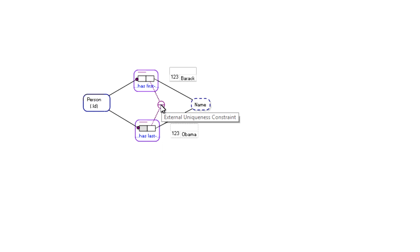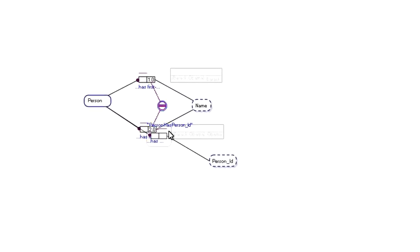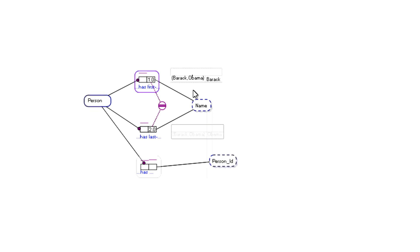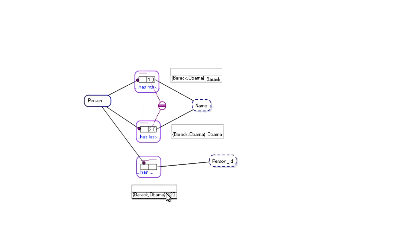And we can reverse that again if we want. So if we want the unique identifying information for person to be first name and last name, we set up an external uniqueness constraint between first name and last name for person, and change the 'is preferred identifier' property for the role constraint. Now the uniquely identifying information for person is first name and last name — Barack Obama's first name Barack, Barack Obama's last name Obama. And if we have a look at the fact table for person has person ID, we can see Barack Obama has person ID 123.